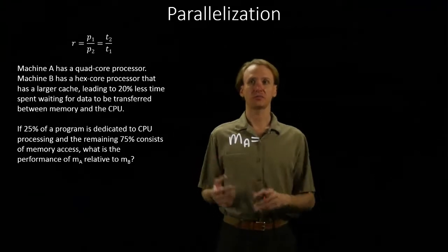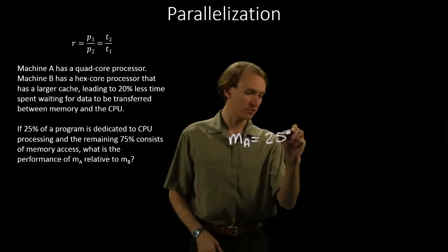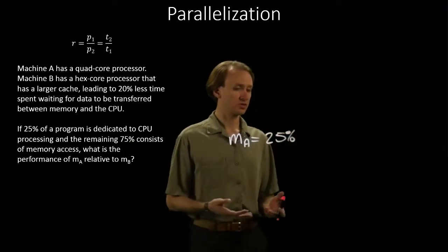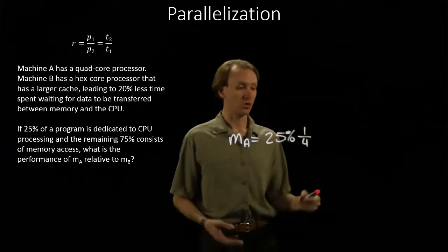So 25% of my program is dedicated to CPU processing. So 25% of my instructions are CPU instructions, and machine A gets a four times speed up, thanks to its quad-core processor.